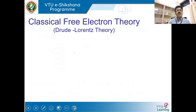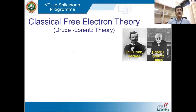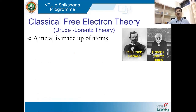Let us see what is the classical approach to understanding the conductivity of metals. This classical approach was explained by two well-known physicists: Paul Drude, a German physicist, and Hendrik Lorentz, a Dutch physicist. This classical theory is also named after them — the Drude-Lorentz theory — and it tells us about the classical approach to explaining the conductivity of metals.